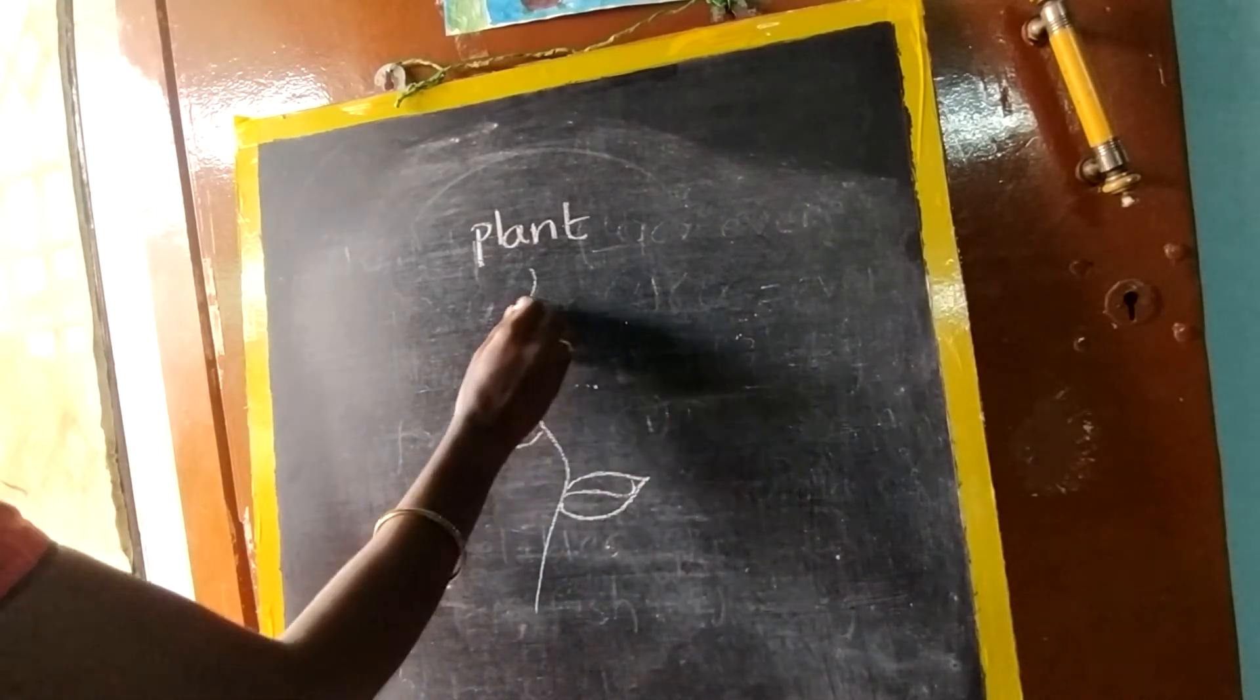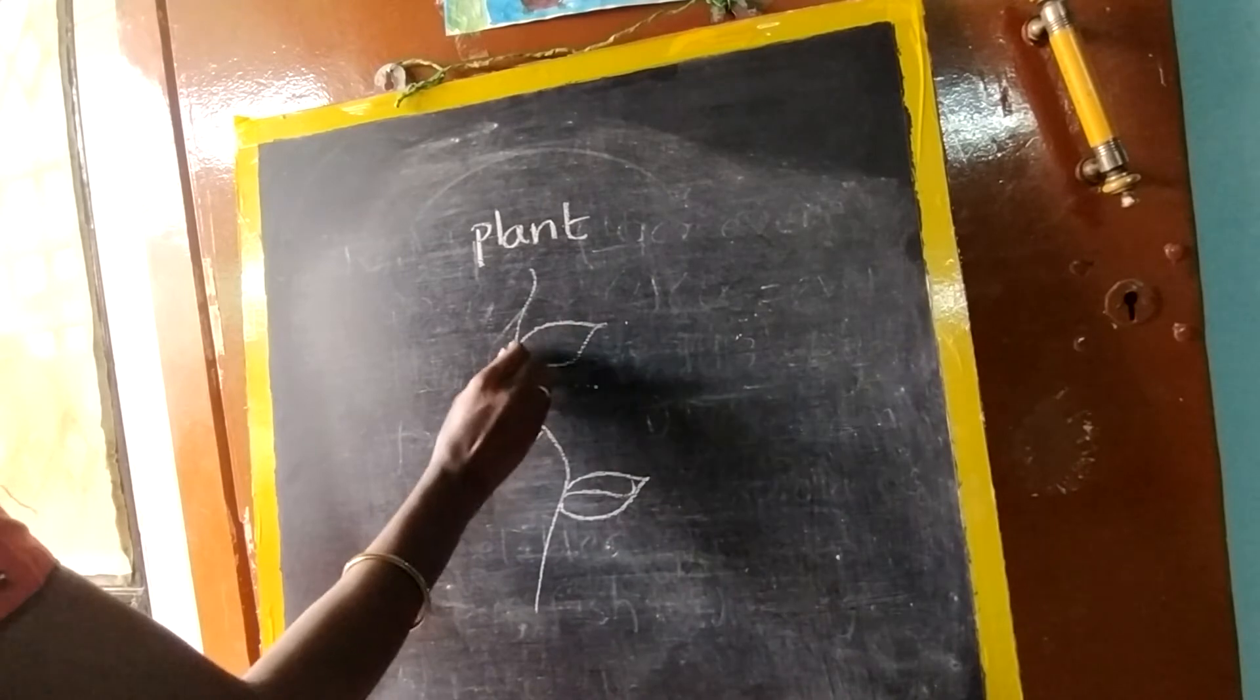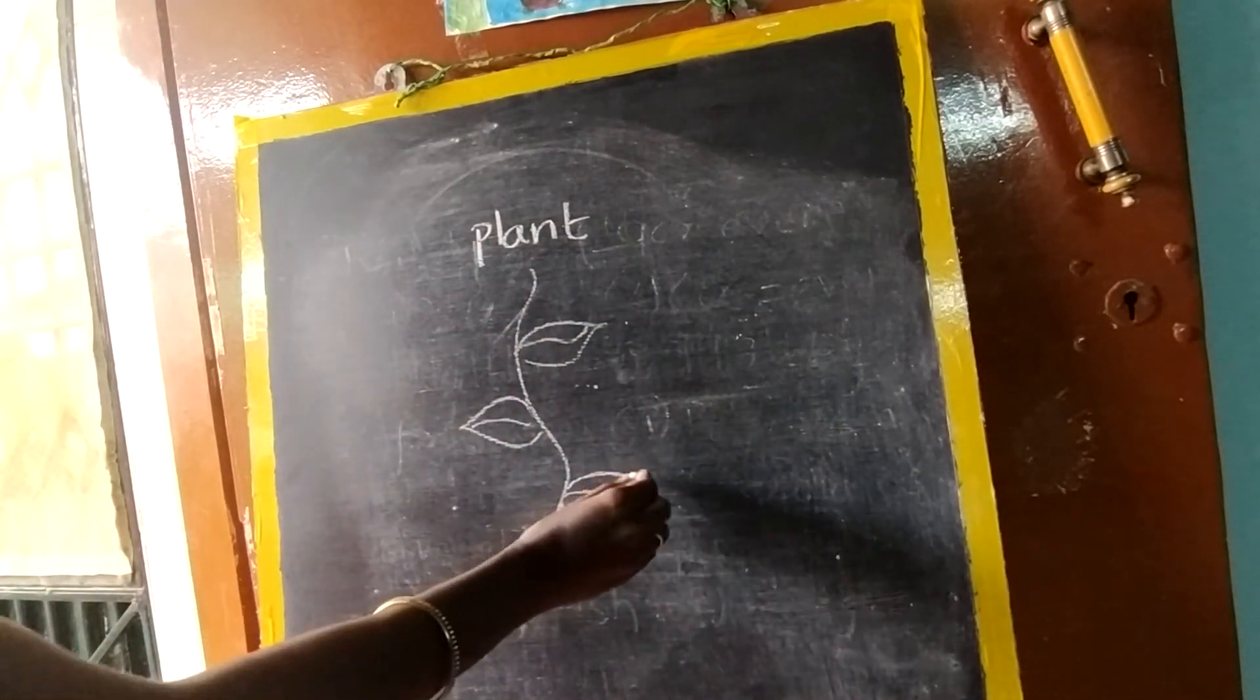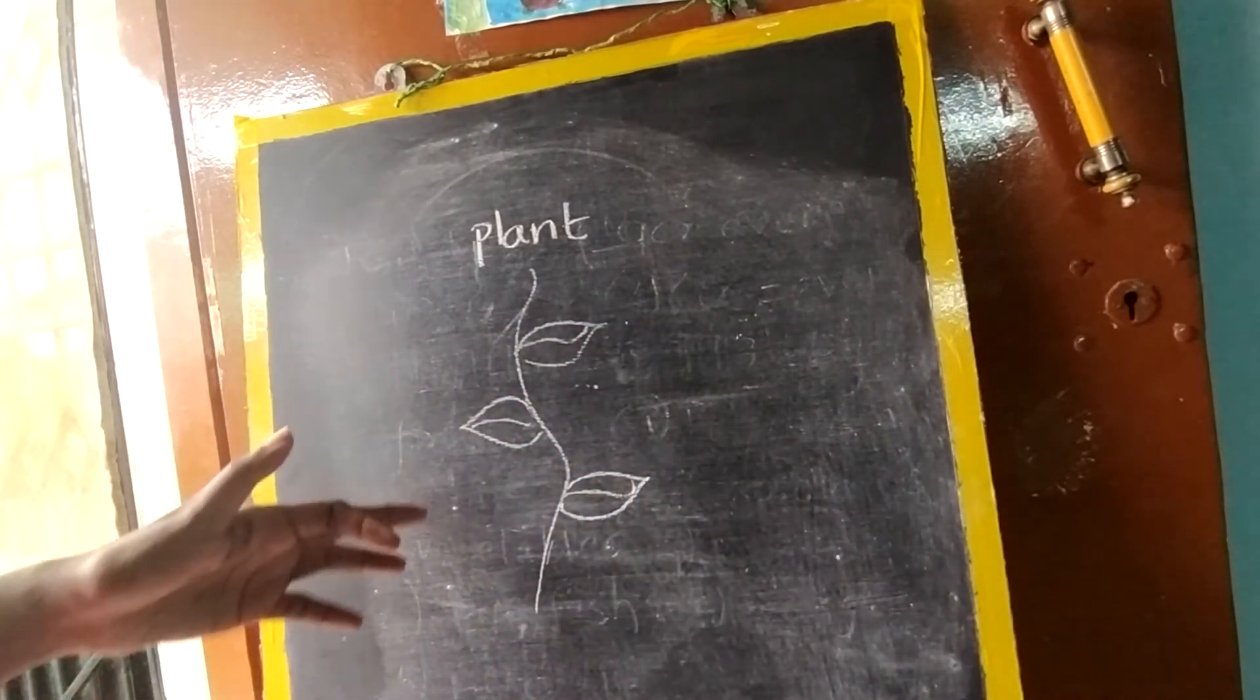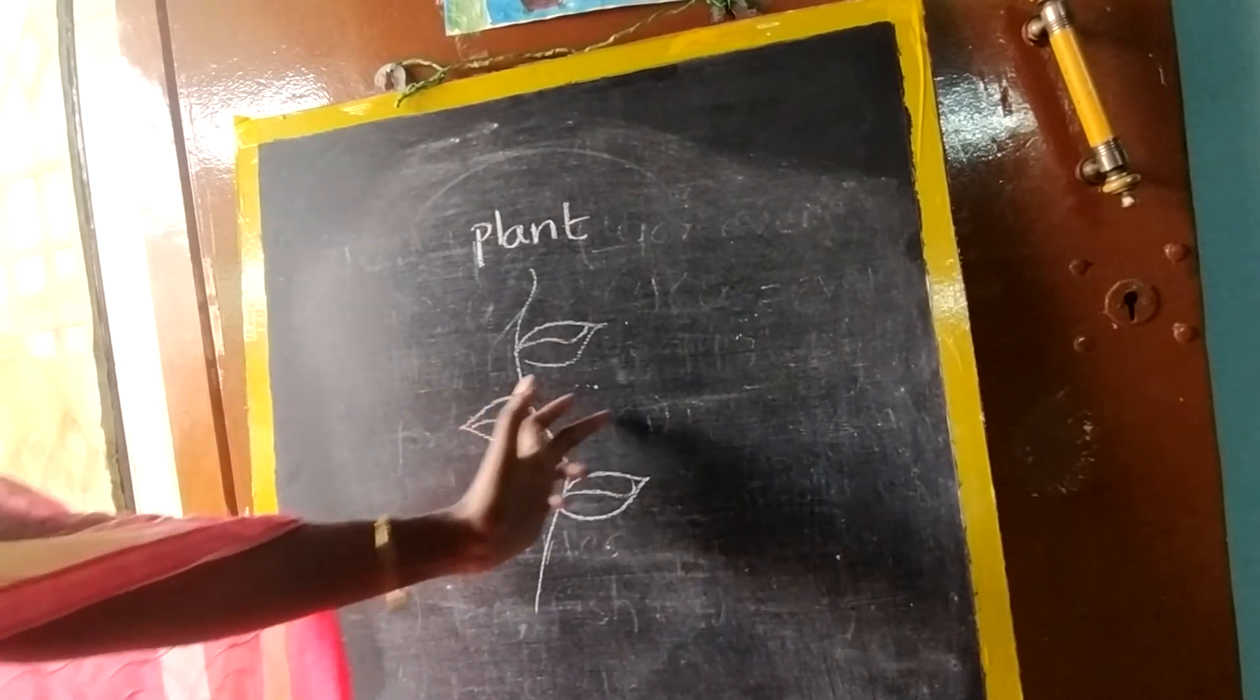So this is leaves, this is called as stem. From stem only, leaf will come. There will be one stem and there will be many leaves. And some plants will have so many stems, from a stem itself it will be growing.